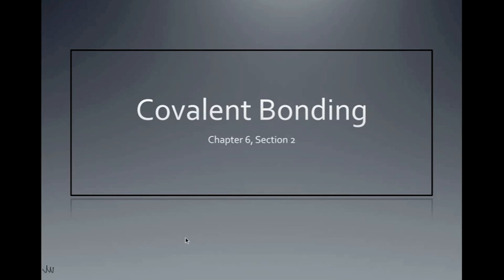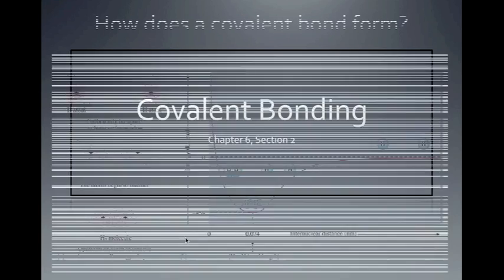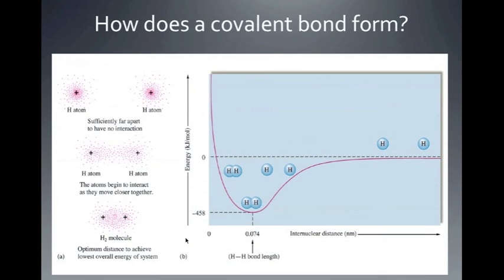We're going to start talking about covalent bonding — this is section 6.2 in your books. First we have to figure out how a covalent bond forms. In the introduction to chemical bonding, we said that a covalent bond is a non-metal to non-metal bond.